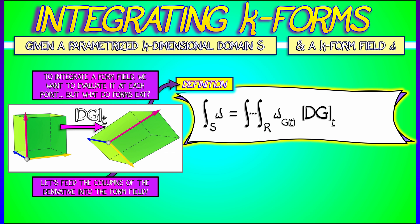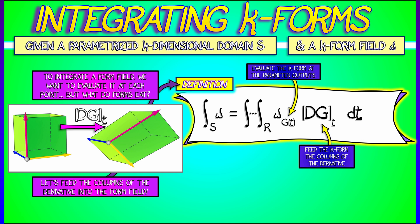First of all, we evaluate that k-form field, omega, at the output, G of T. We feed that k-form, the k columns of the derivative, DG, evaluated at the input, T.